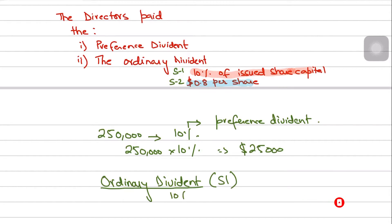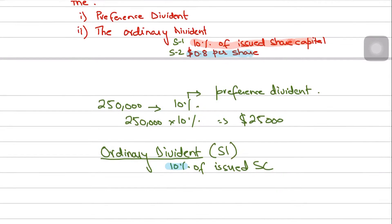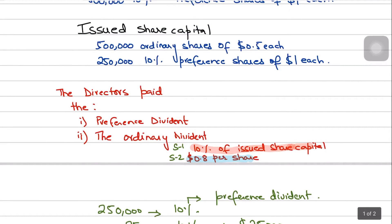In scenario 1, the ordinary dividend is paid as 10% of the issued share capital. Whenever a percentage is given, you multiply the issued share capital by that percentage. The issued share capital is not simply the number of shares — the company issued 500,000 ordinary shares at $0.50 each, so 500,000 is the number of shares, not the issued share capital.